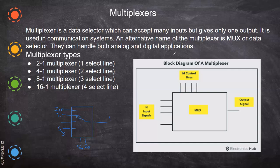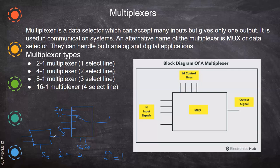The multiplexer types are: a 2-to-1 multiplexer has two input lines, one output line, and one control line — because two to the power one is two inputs, requiring one select line. If it is two to the power zero we have one; if it is two to the power one we have two. So two input lines and one output. If the select is zero, I0 is selected; if it is one, I1 is selected — switching between these two.